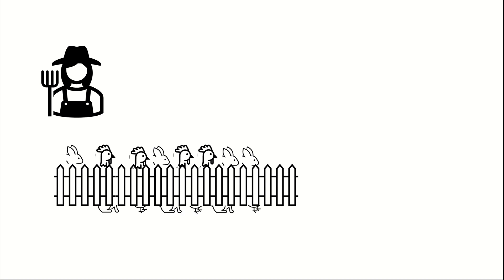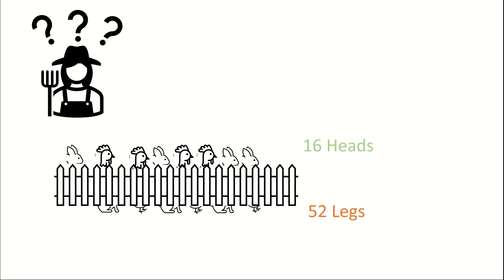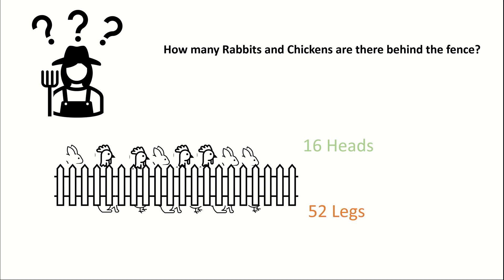She counted the heads — there were altogether 16 heads. So the farmer pondered: how many chickens and rabbits are there behind the fence?